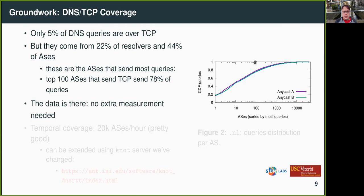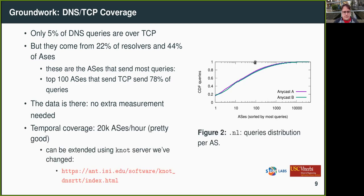The coverage in TCP is pretty good. The temporal coverage we get per hour — for .NL, we're getting roughly 20,000 ASes per hour. Most of the traffic comes from 1,000 ASes, so it's pretty good. It can even be improved further if you use the instrumented version.